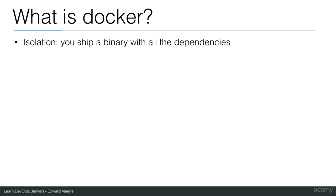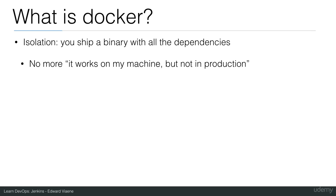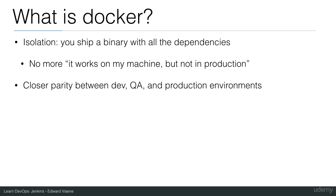Docker provides you with isolation. You ship a binary — the Docker image — with all its dependencies. No more 'it works on my machine but not in production.' With Docker you bundle the dependencies, the code, everything together and ship it, giving you closer parity between dev, QA, and your production environments.